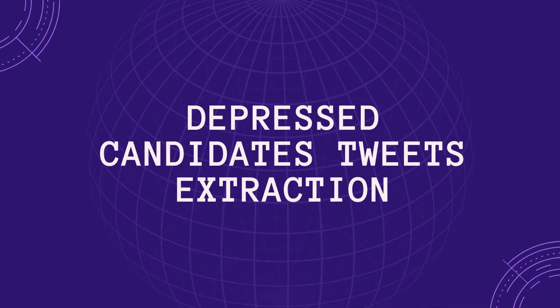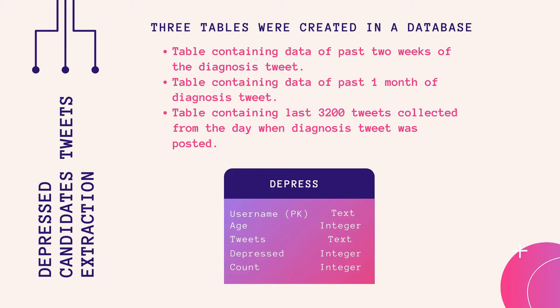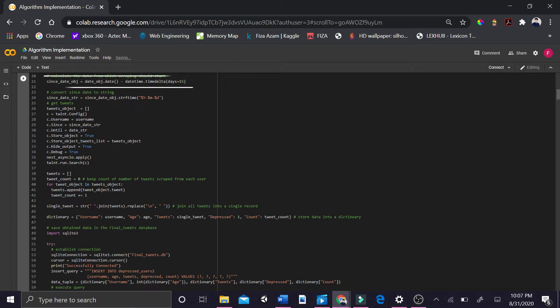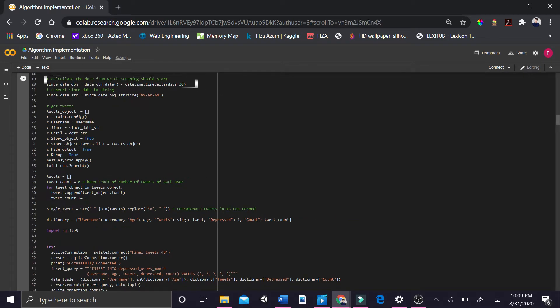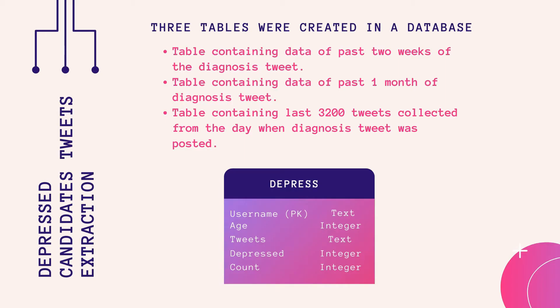Depressed candidates tweets extraction: three tables were created in a database — containing tweets from the past two weeks, past one month, and the last 3,200 tweets from the day the diagnosis tweet was posted. All public tweets of the selected candidates were extracted, concatenated, and stored such that each user has only one record in each table.